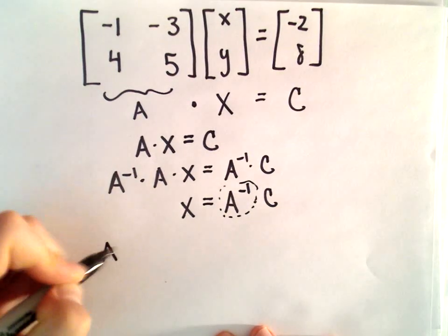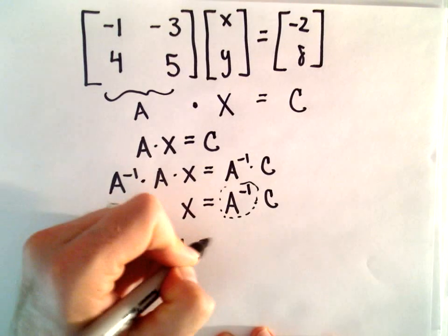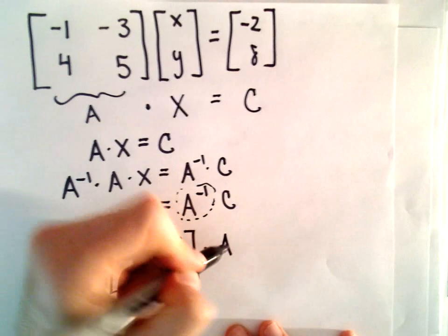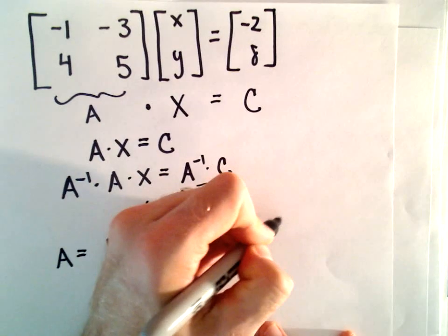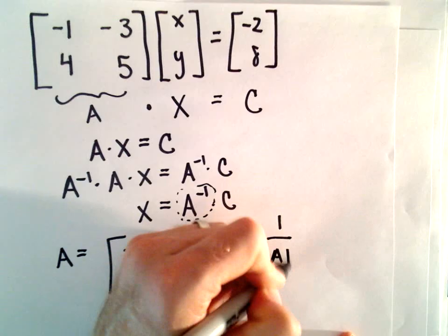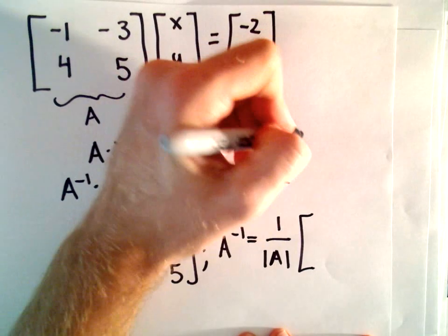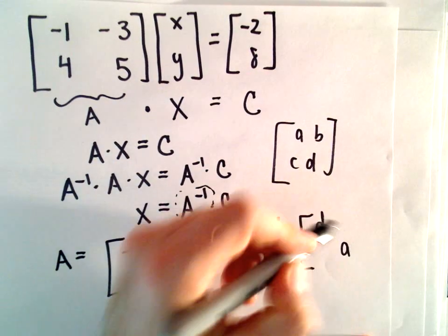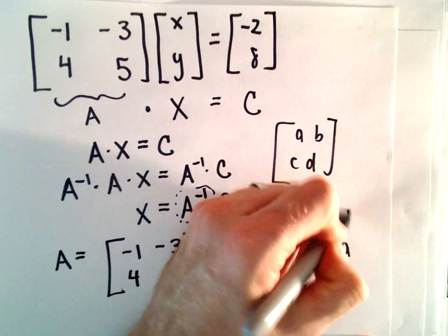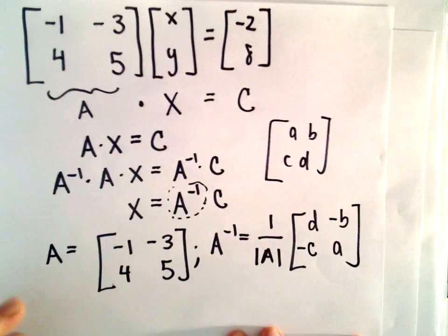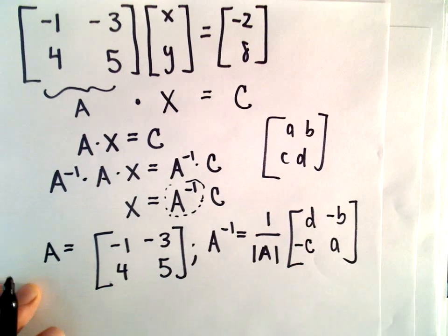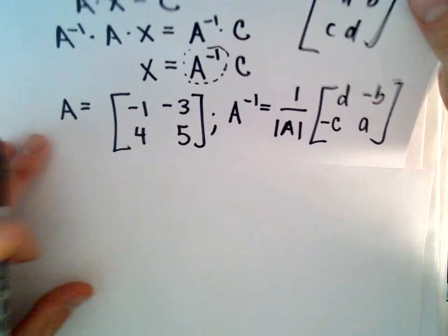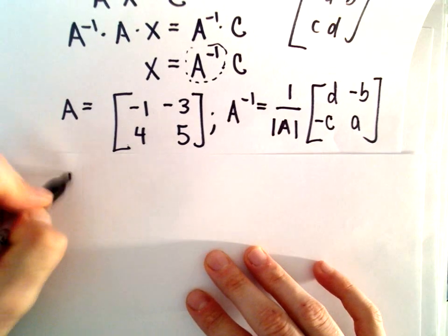Okay, so again, A has entries negative 1, negative 3, 4, and 5. We've seen to get the inverse, you can take 1 over the determinant. And then if our original matrix has entries A, B, C, and D, you just switch the entries D and A, and then change the sign on B and C. So I'm going to use this formula to calculate the inverse. To me, it seems certainly the most simple way to do that.